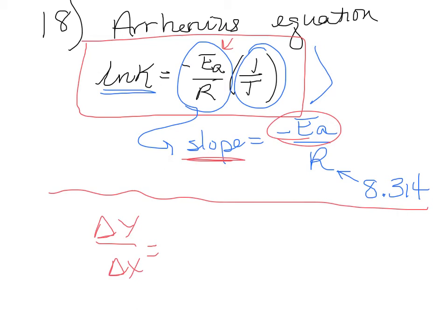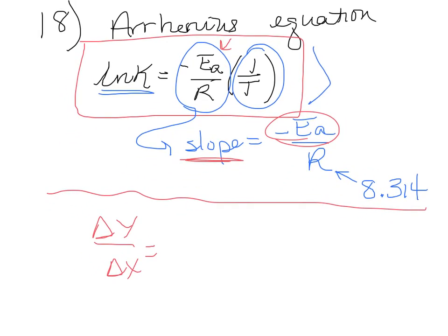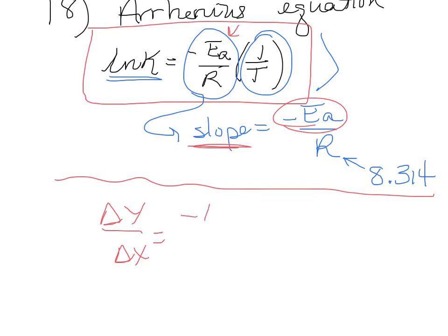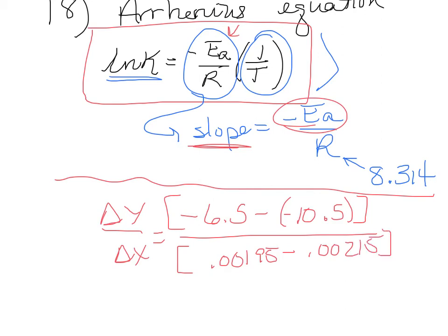The change in the Y value goes from minus 6.5 minus negative 10.5. All these negatives. That's the change in the Y value that they've marked off. The change in the X value is, that looks like, 0.00195 for the first value. And the final value looks like 0.00215.